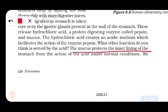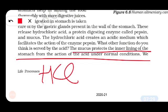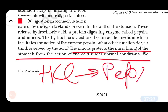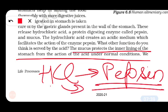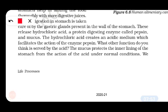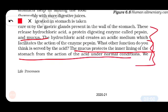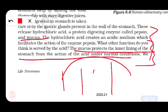The mucus protects the inner lining of the stomach from the action of acid under normal conditions. HCl helps the pepsin enzyme to digest protein by providing an acidic medium. So in the stomach we have: mucus, HCl, and pepsin. Pepsin is a protein-digestive enzyme and HCl helps create the acidic medium needed for pepsin to work.